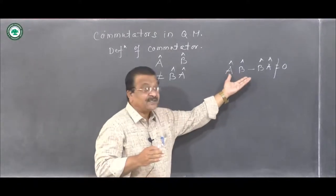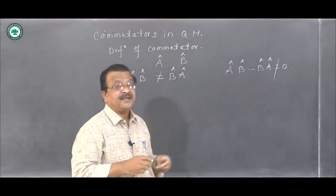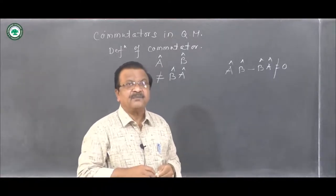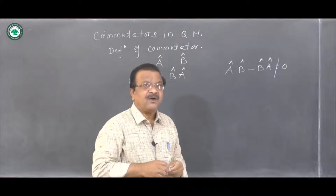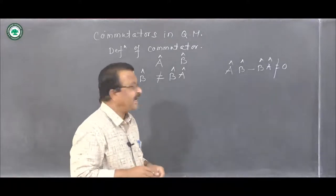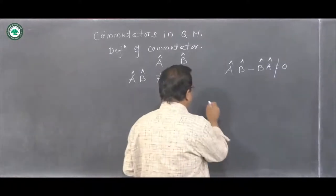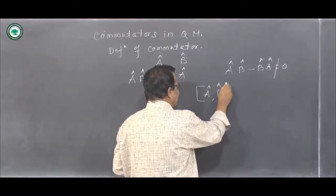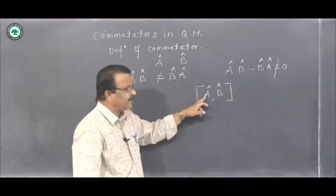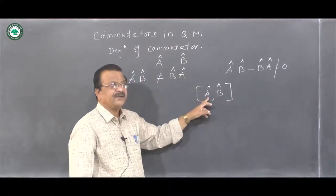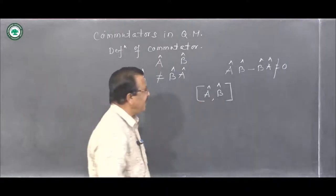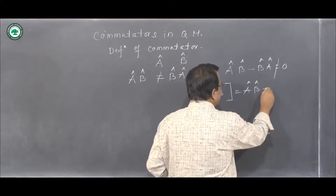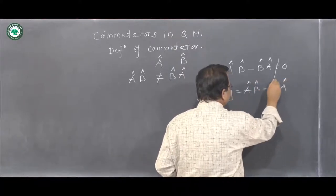This difference AB minus BA — the forward product of operators minus the reverse product of operators — is called the commutator of operators A and B, and is denoted by the square bracket [A, B]. This is called the commutation bracket of operators A and B, and is defined as AB minus BA.